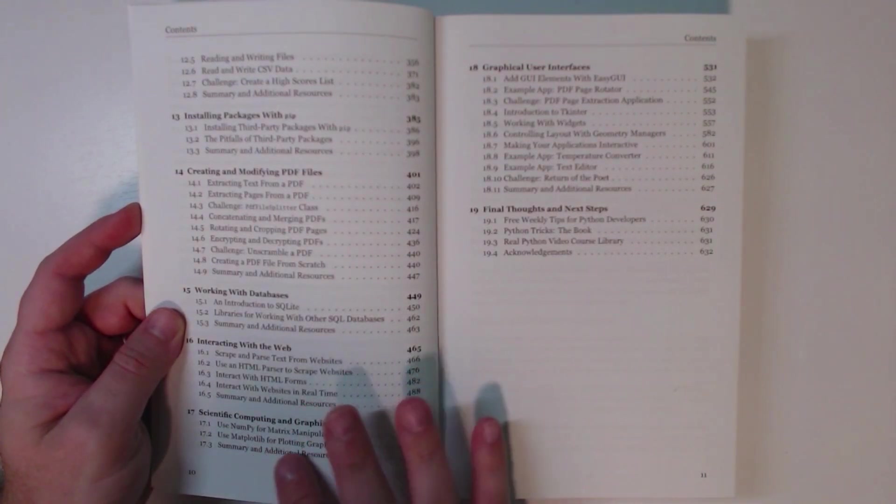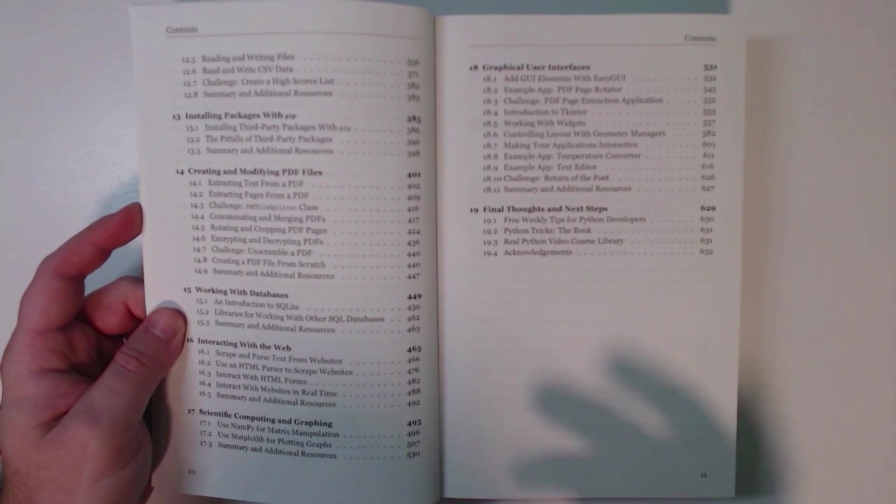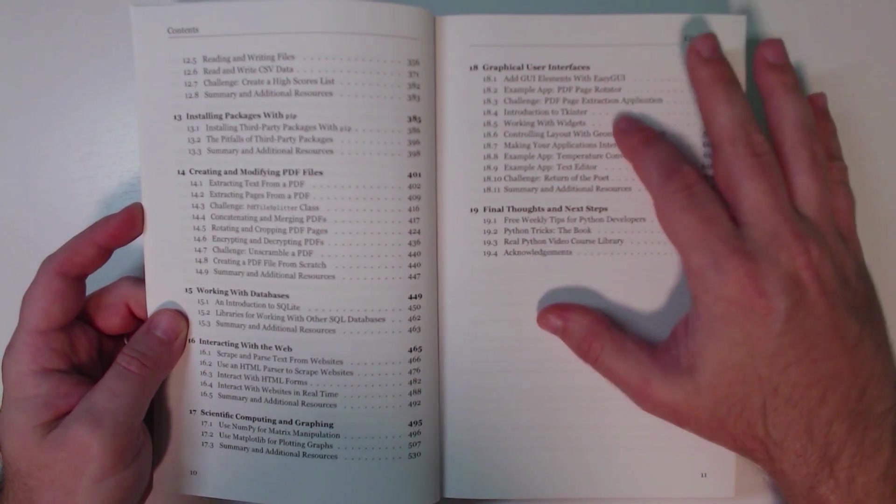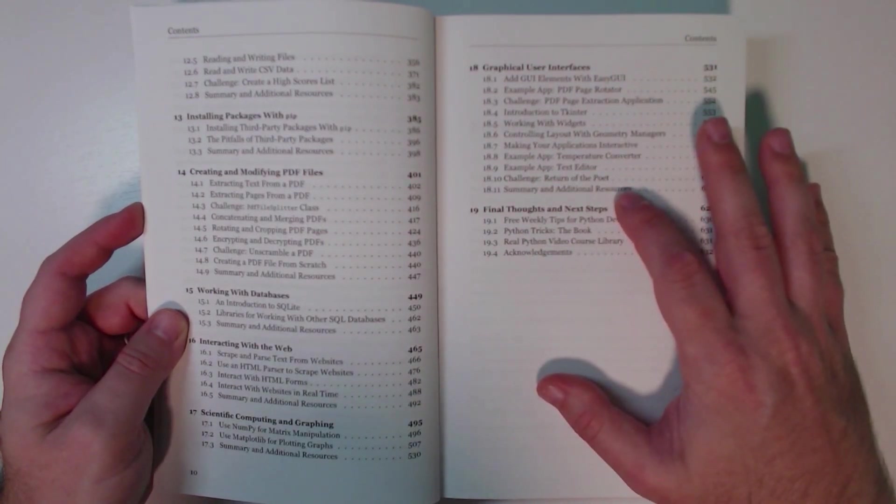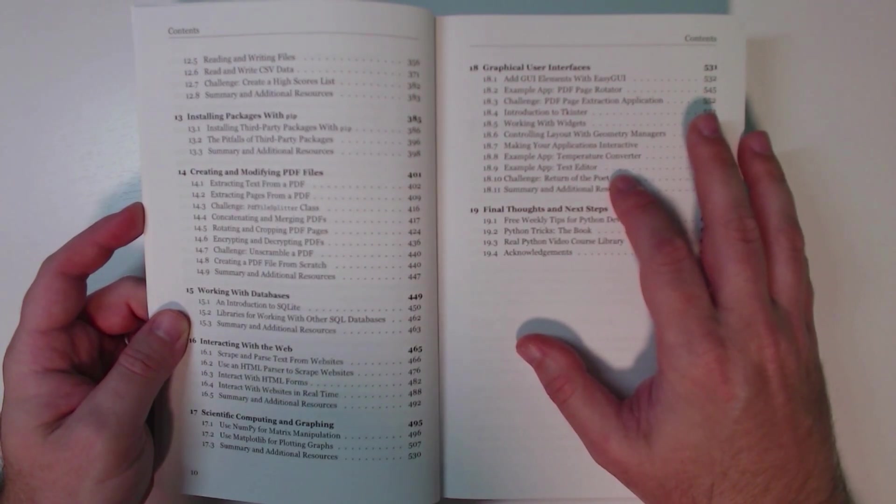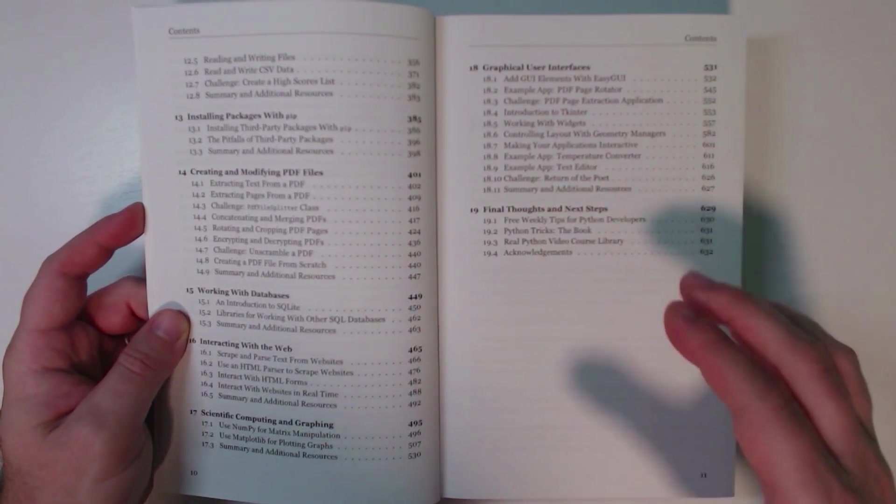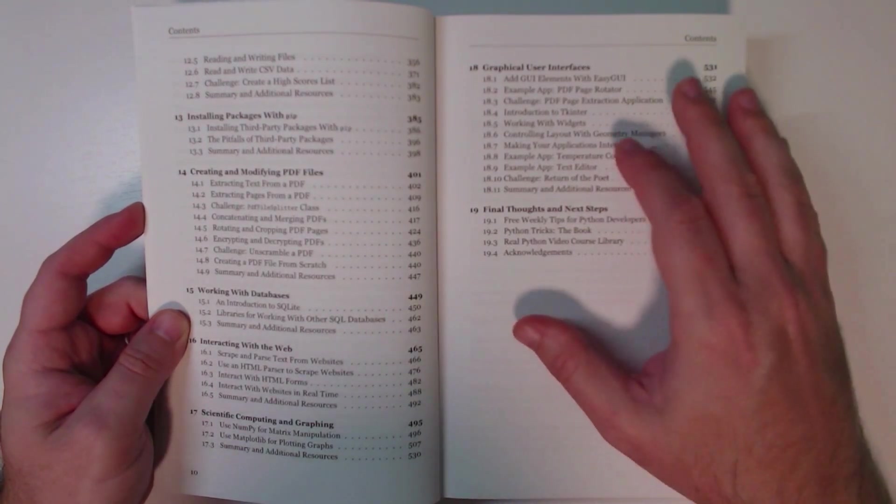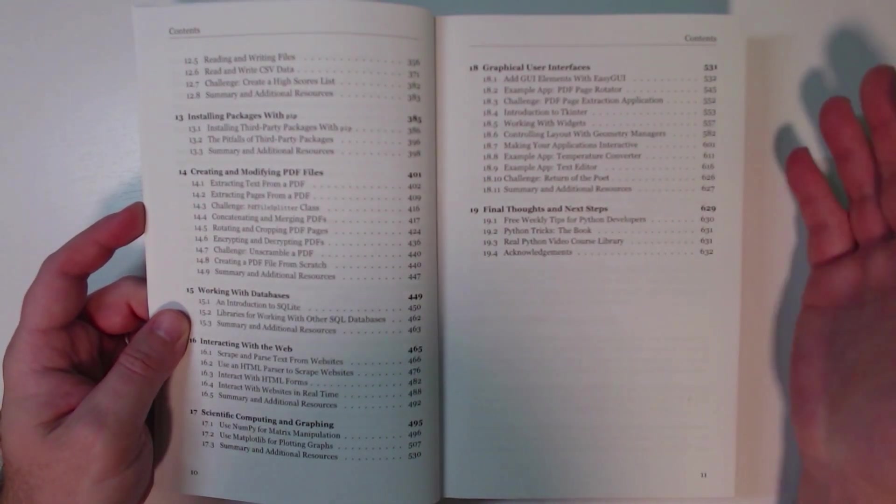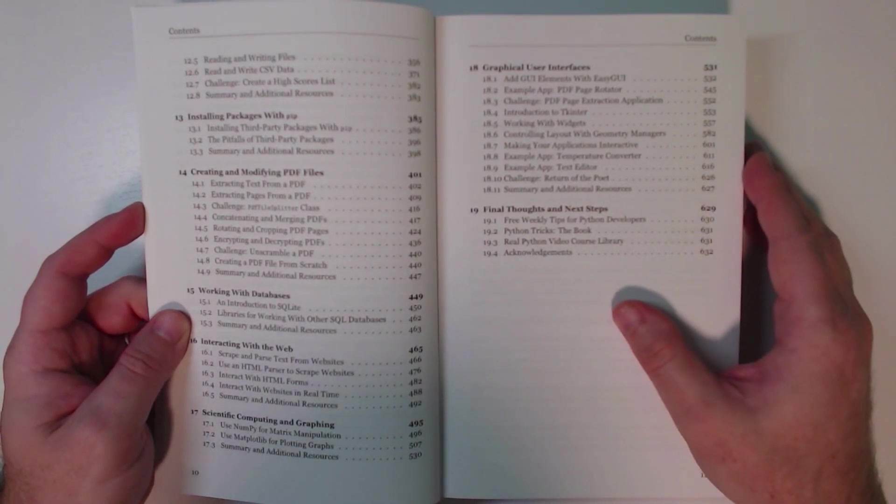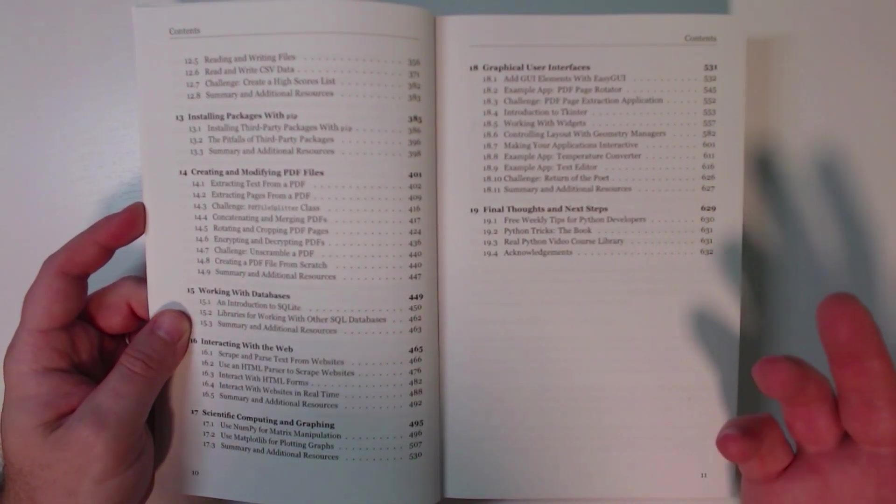Some topics in scientific computing and graphing, a very brief introduction to the NumPy and Matplotlib libraries, as well as a pretty extensive chapter on graphical user interfaces. This focuses on the Tkinter package in the standard library. Again, just because that comes with Python and offers the lowest barrier of entry for people getting started.